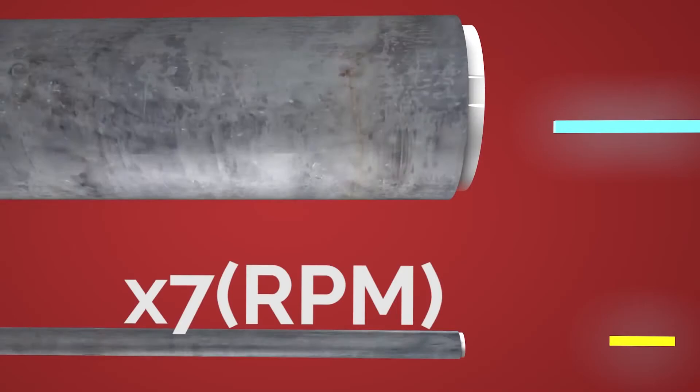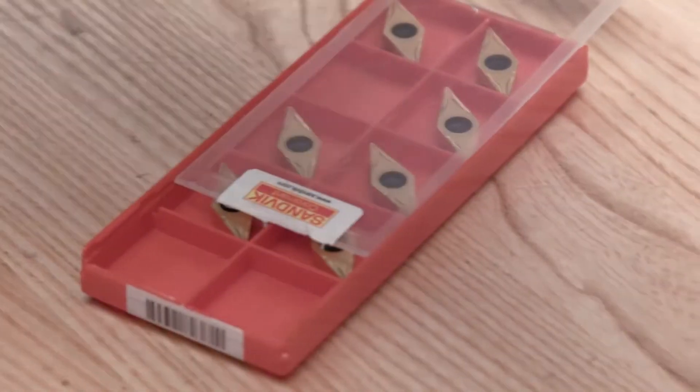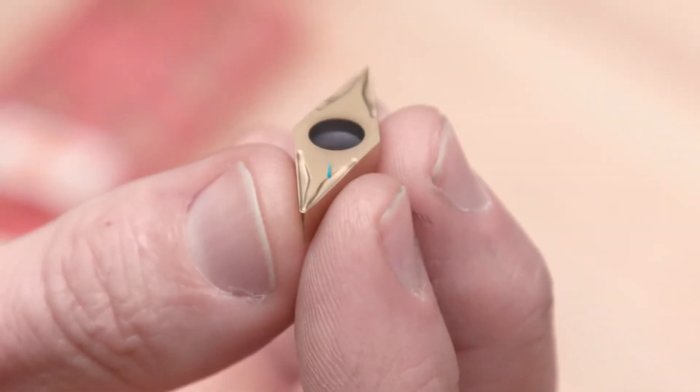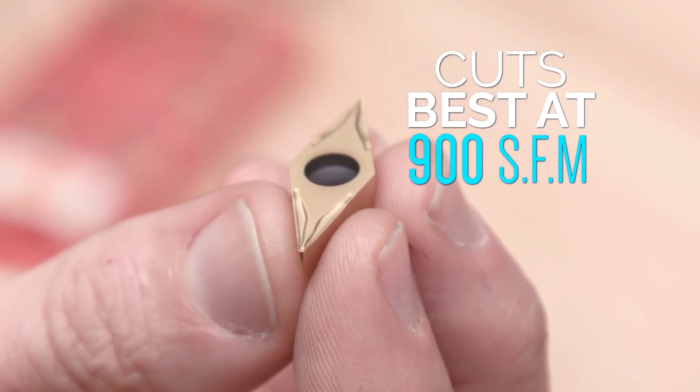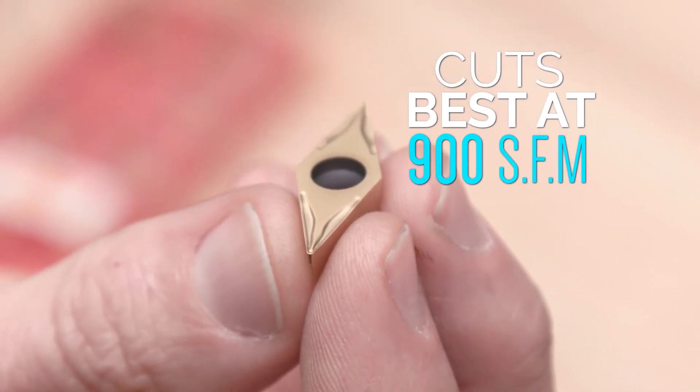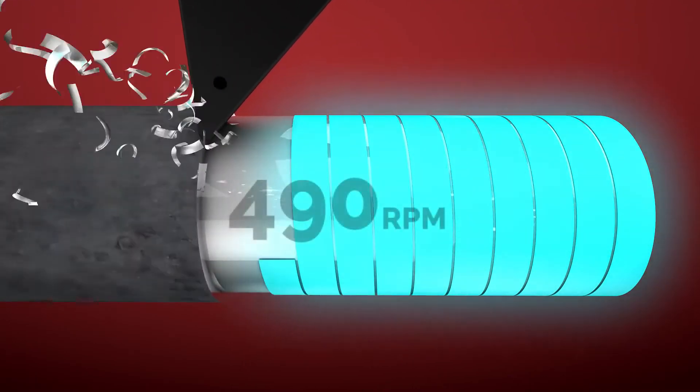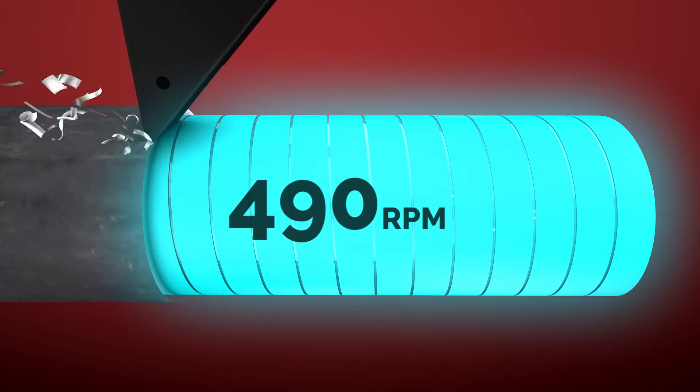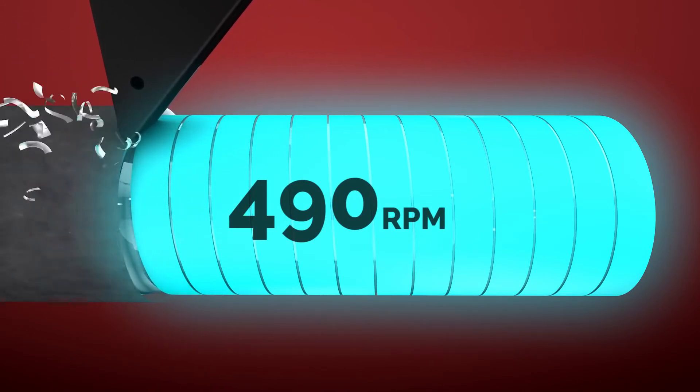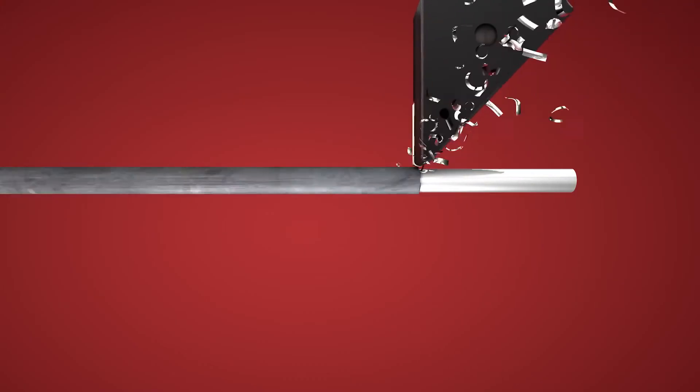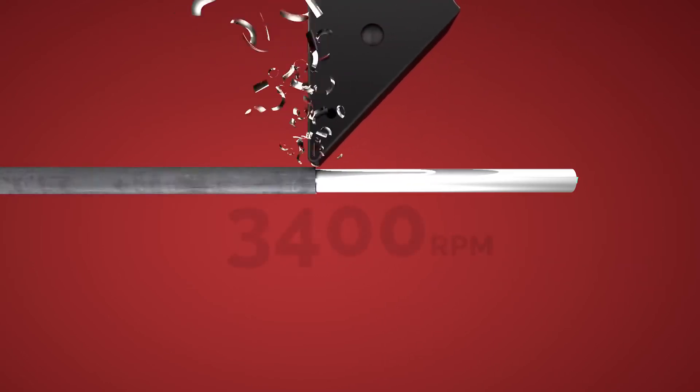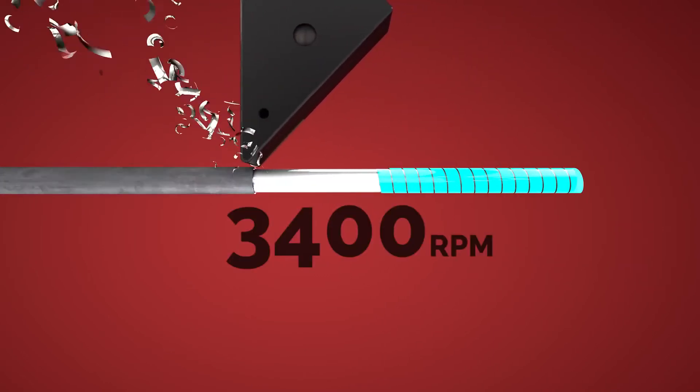Now let's say we want to use this insert, and it cuts best at a surface footage rate of 900 SFM, or surface feet per minute. That's 900 feet of material rotating past the cutter every minute. To get 900 surface feet per minute on our 7 inch part, we need to cut at 490 RPM. But to get 900 surface feet per minute down at a 1 inch diameter, we have to crank that speed up to about 3400 RPM.